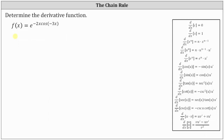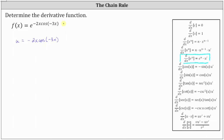We'll be using the derivative formula. The derivative of e to the u with respect to x is equal to e to the u times u prime. Notice u is equal to the exponent, which in our case indicates that u is equal to negative 2x times cosine of negative 3x. So if we let u equal the exponent, we can think of f of x as just the function e to the u when applying the derivative formula.